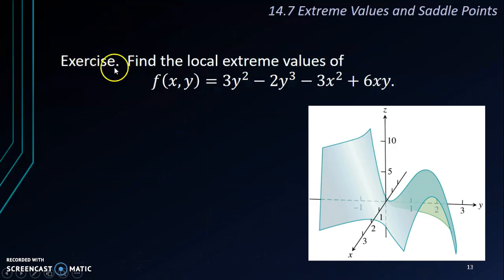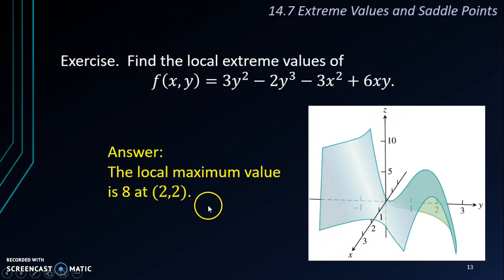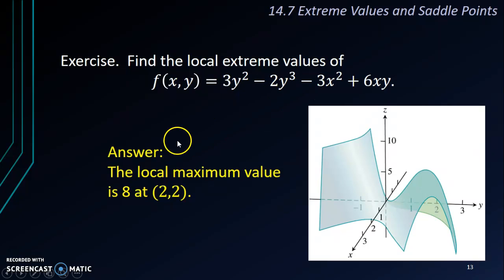Now let's take a look at this exercise — try this question. The graph of the function is shown as a guideline, but you can also solve it without looking at the graph. Pause the video and try to solve it. The final answer: the local maximum value of f is 8 at (2, 2). In the next video, we are going to look for the absolute maximum and absolute minimum of a function from a closed region.